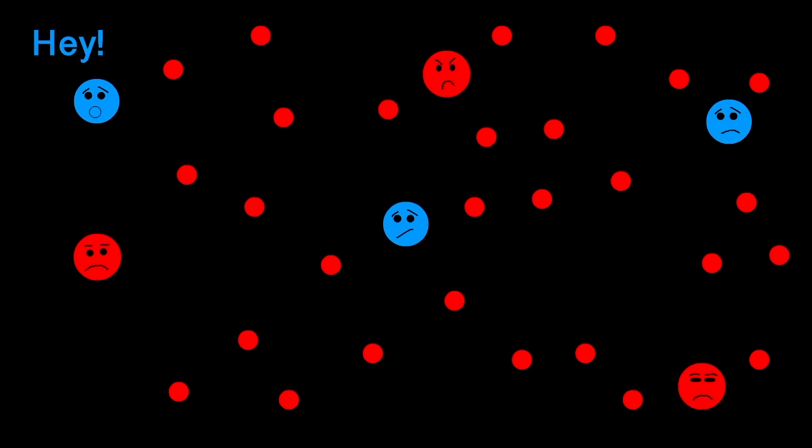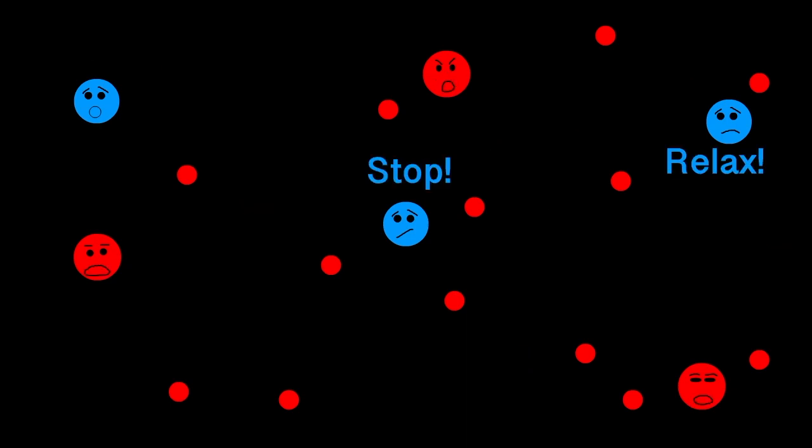Some cytokines are pro-inflammatory and cause the activation of other inflammatory molecules, beginning an inflammation cascade. Meanwhile, other cytokines are anti-inflammatory and act by decreasing production of and inhibiting inflammatory cytokines.